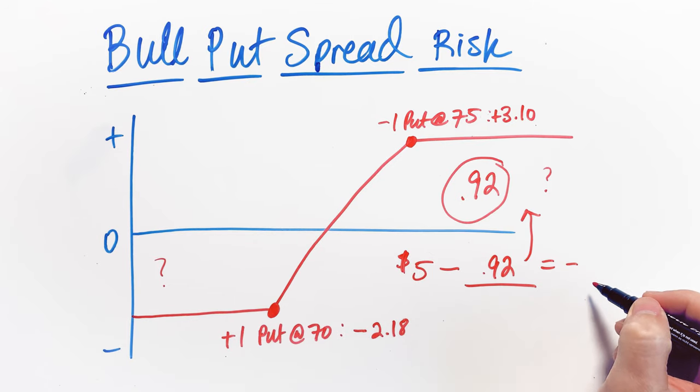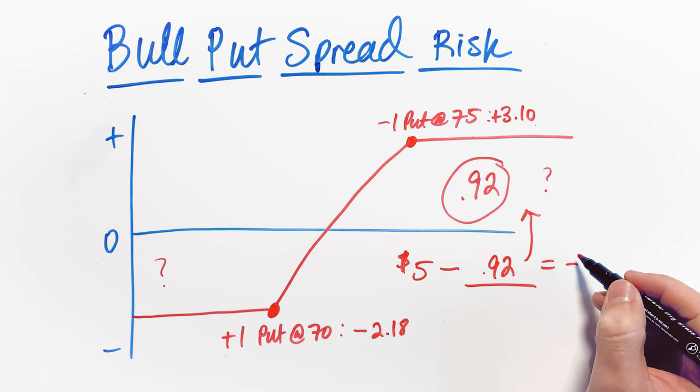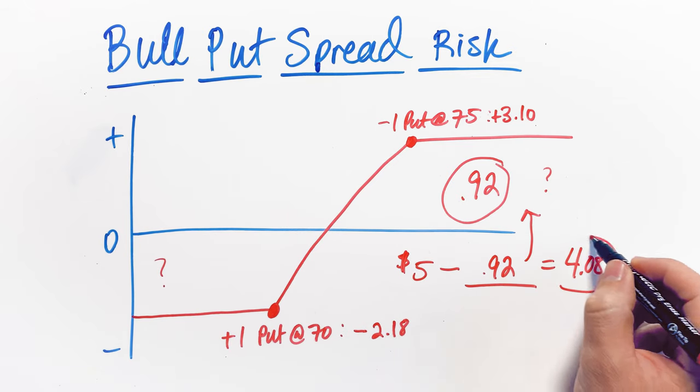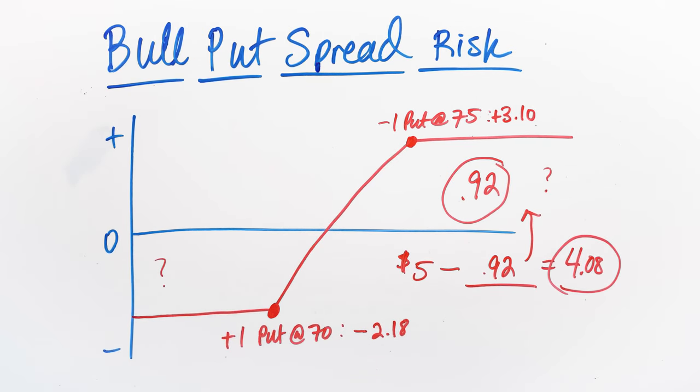In this case, the total risk that we still have left over in the position is $4.08. $4.08 is how much we actually have to put up in margin or how much we're risking if the stock goes the other direction and goes lower, closes well beyond our 70 strike put option that we purchased here. That's how much we'd be risking.